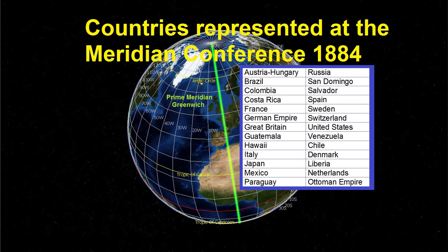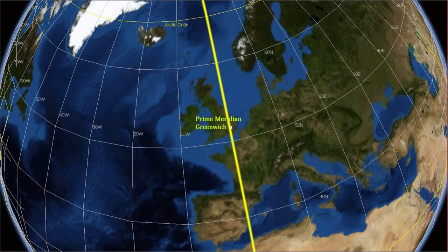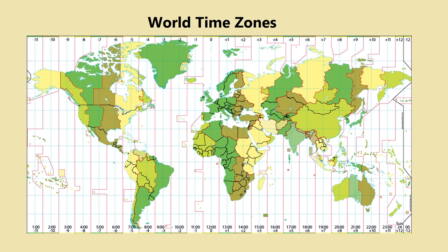In 1884, delegates from 26 countries met in Washington DC to agree on a prime meridian as a common zero point for longitude. The result was Greenwich, England being selected as the international standard for zero degrees longitude, and the 24 time zones were established.